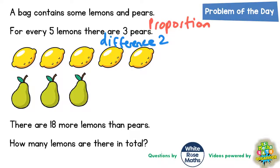We're told that there are 18 more lemons than pears. So how many lemons are there in total? That difference of two is crucial because the difference of two suddenly becomes a difference of 18.